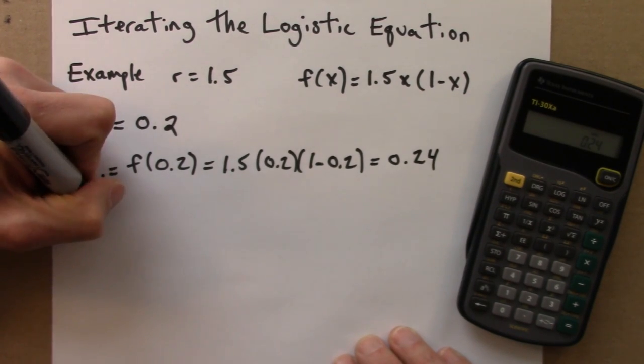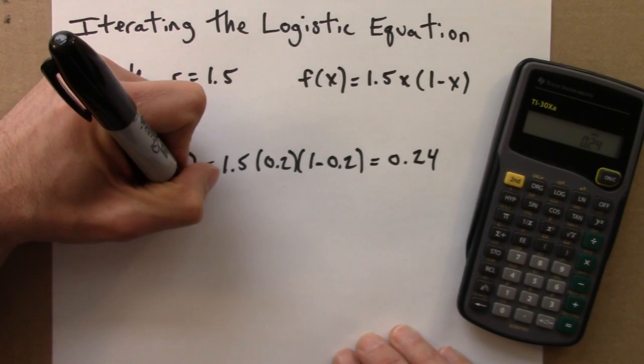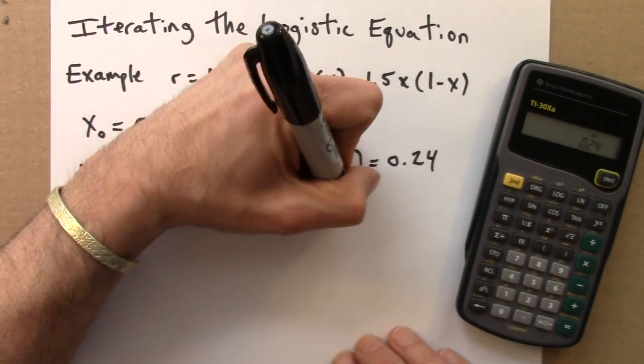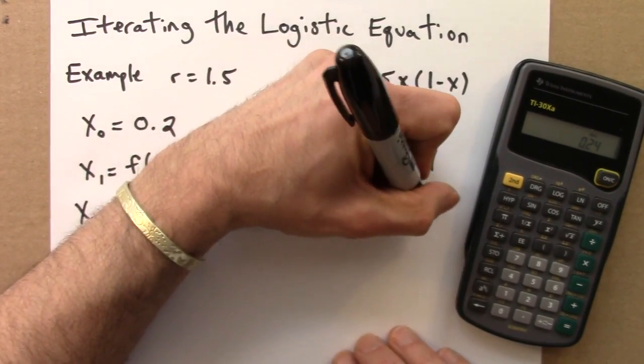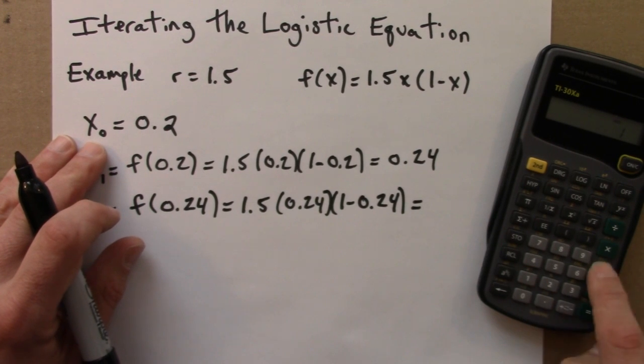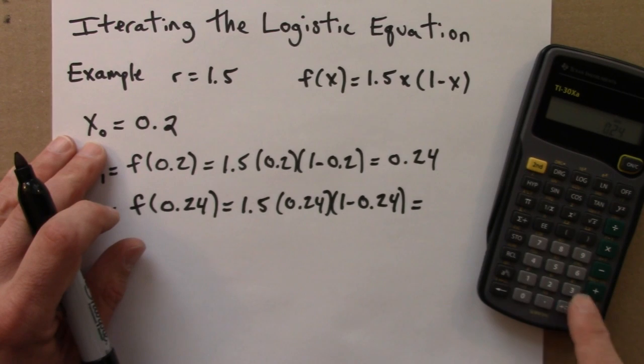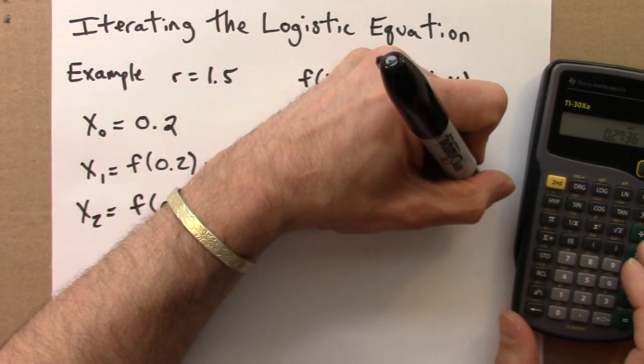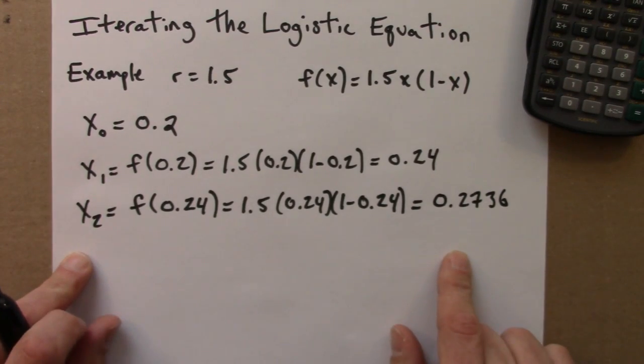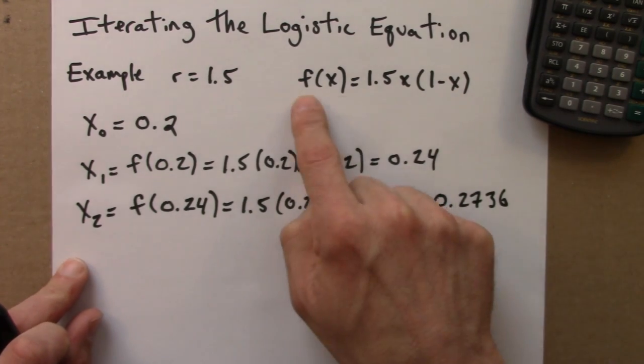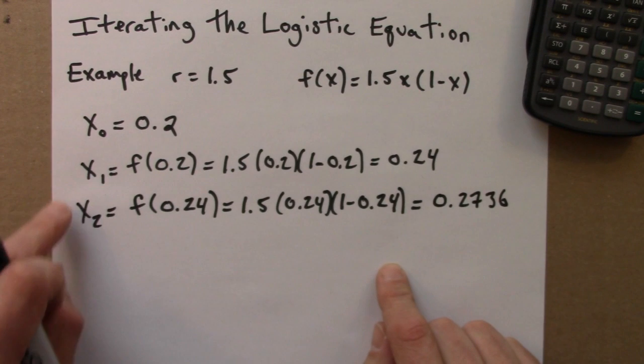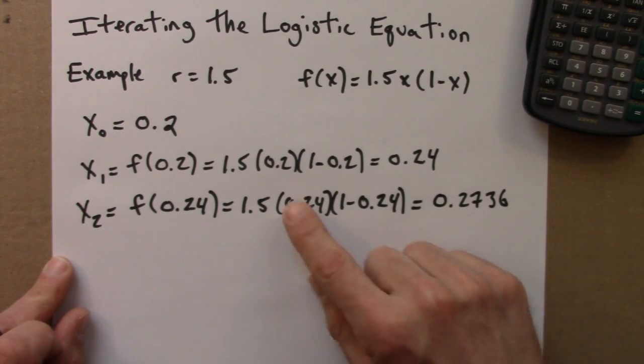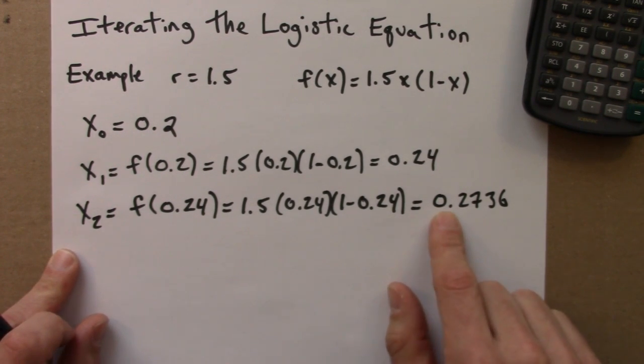Okay, so then the next iterate is f applied to 0.24, which is 1.5, 0.24, 1 minus 0.24. Let's do that on a calculator. And I get 0.2736. And we can keep going and going. We get the next iterate, the next value in the orbit, by applying the function. So we can apply this function again and again to a seed, and then we can ask what its long-term behavior is. We'll do that in the next subunit. Before you do so, I suggest doing the quiz that follows this lecture just to make sure you see how this goes.